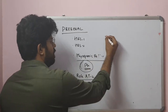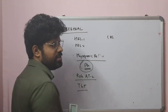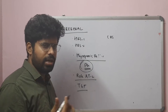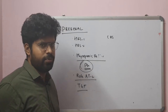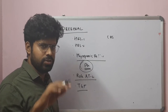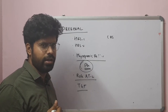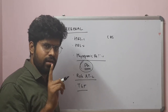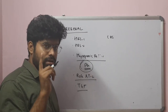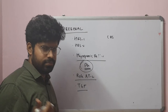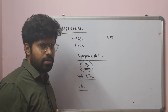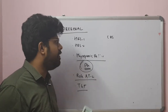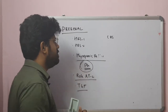Other pre-renal considerations include cardiorenal syndrome types 1, 2, 3, 4, and 5. Types 1 and 2 are cardiorenal — acute cardiac conditions like ACS causing AKI. Types 3 and 4 are renocardial — acute kidney injury causing acute heart disease. These are the cardiorenal syndromes.